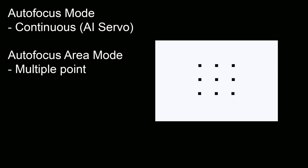Notice here next to continuous I've put in brackets 'AI Servo.' On most brands, continuous autofocus is called AFC — autofocus continuous. But on most Canon cameras it's called AI Servo, so if you have a Canon DSLR and you can't find anything that says AFC, look out for AI Servo in your autofocus mode options. I also change my autofocus area mode to multiple point. That means I don't have to worry about keeping a single point trained on the moving subject — as long as my bird is somewhere in the middle of the frame, the multiple point focus can usually pick it out.